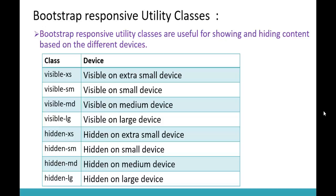Here is a list of Bootstrap Responsive Utility Classes available: visibleXS, visibleSM, visibleMD, visibleLG, and similarly hiddenXS, hiddenSM, hiddenMD, hiddenLG. Here XS stands for Extra Small, SM stands for Small, MD stands for Medium, and LG stands for Large.